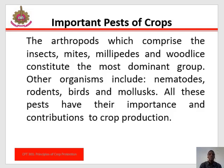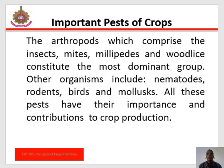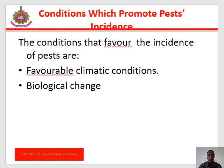Rodents are also important pests. These are mammals with teeth which are well adapted to grind hard substances. They include mice, squirrels, porcupines, rats, and grass cutters. These animals may damage fruit and vegetables and are particularly injurious to young seedlings of oil palm, rice, sugarcane, and tubers of root crops such as cassava.